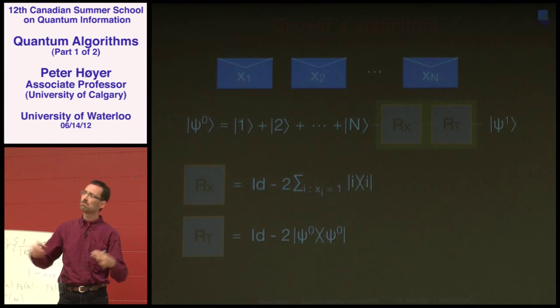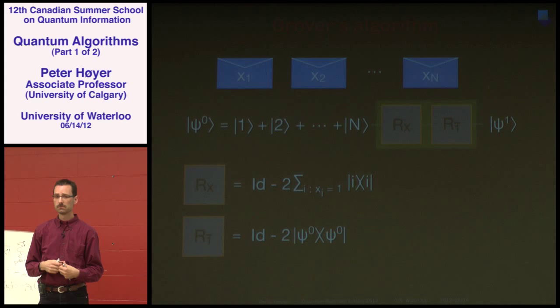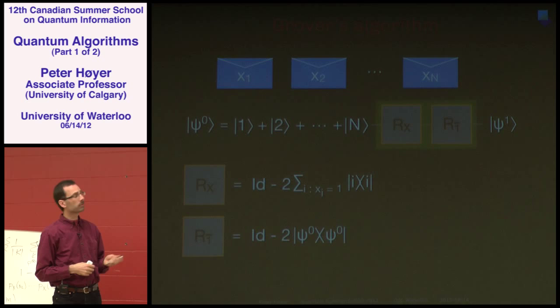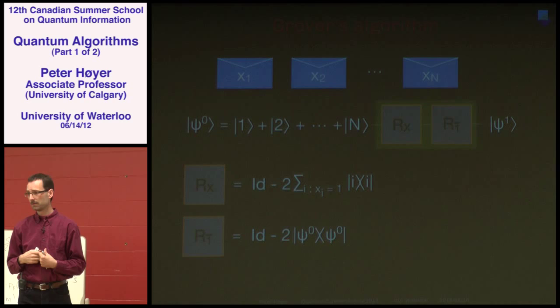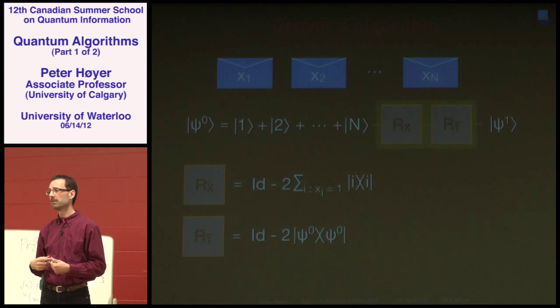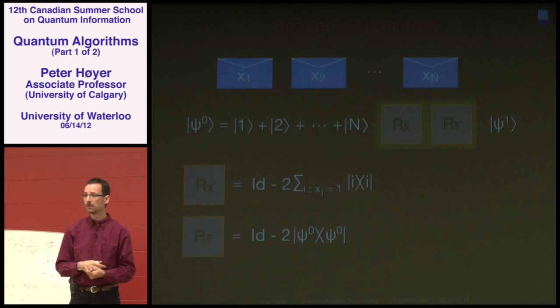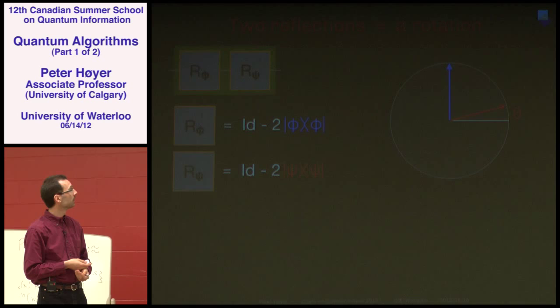Taking these two operators together gives the Grover Iterate — the green operator. This is Grover's algorithm. We have rediscovered Grover's algorithm simply by thinking about what you can do with one query and doing the obvious thing at every step.